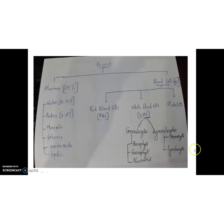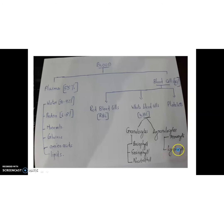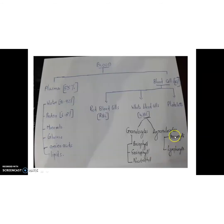The next category of WBC is agranulocytes, which means they are devoid of granules on their cytoplasm. There are two types of agranulocytes: monocyte and lymphocyte. In the diagram you can see lymphocyte and monocyte — the cytoplasm is devoid of granules. That's why they are called agranulocytes.